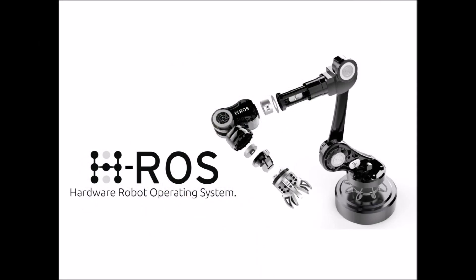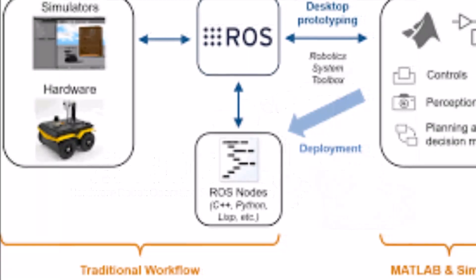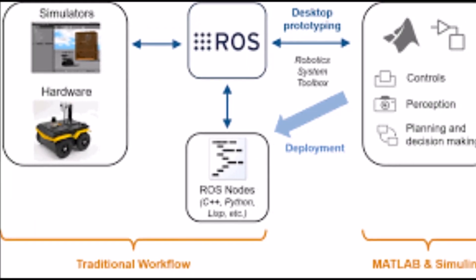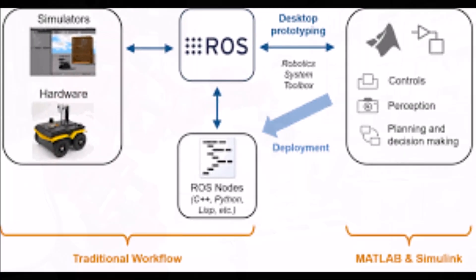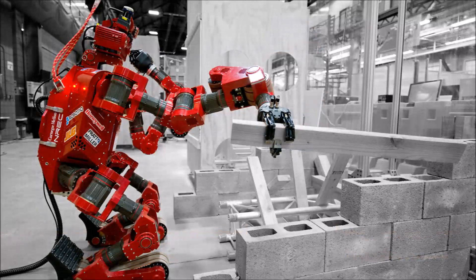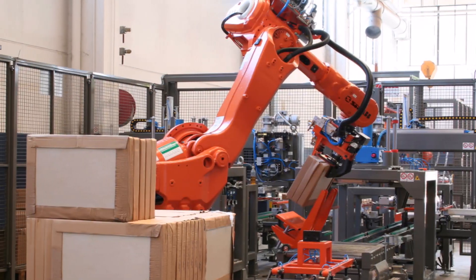The lack of support for real-time systems has been addressed in the creation of ROS 2.0, a major revision of the ROS API which takes advantage of modern libraries and technologies for core ROS functionality and adds support for real-time code and embedded hardware.